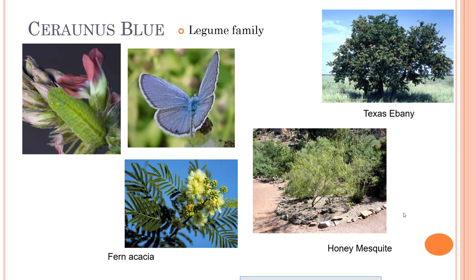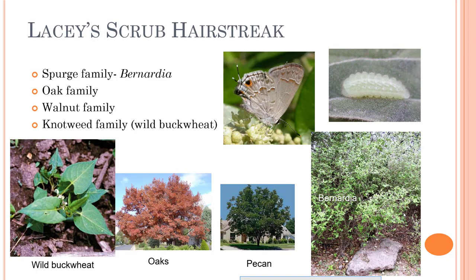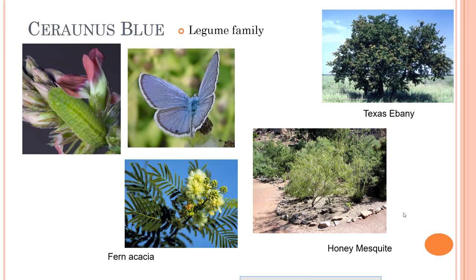Syranus blue is a really pretty, very blue-colored butterfly. It loves things in the legume family. Its caterpillar is really similar to that of Lacy's scrub hairstreak. It likes fern acacia, honey mesquite, Texas oak, and Texas ebony — things that are native, which is why these are really common butterflies here.